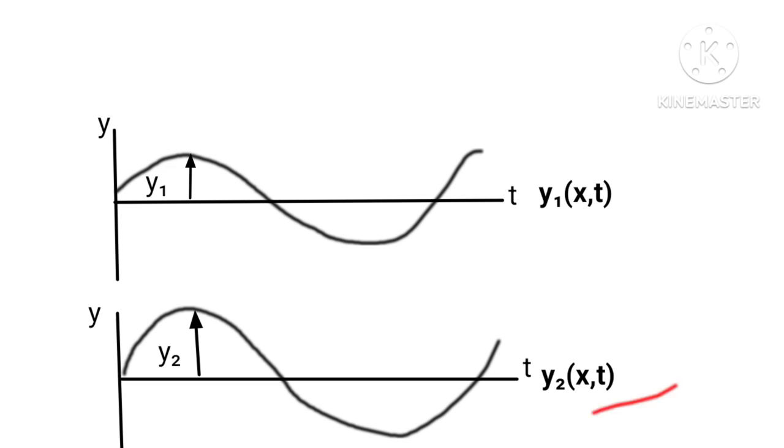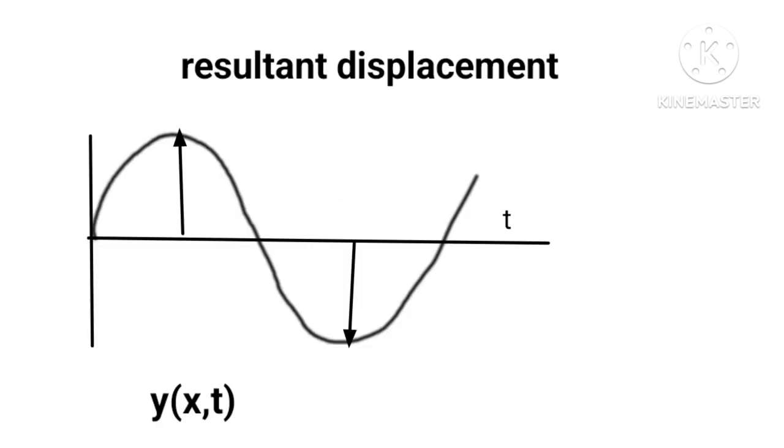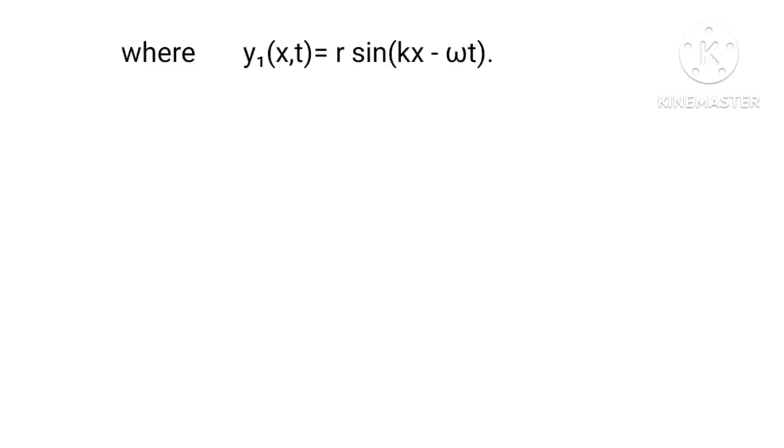When these two waves overlap, the resultant displacement can be given as y(x,t). Mathematically speaking, y(x,t) = y₁(x,t) + y₂(x,t), where y₁(x,t) = r sin(kx - ωt).